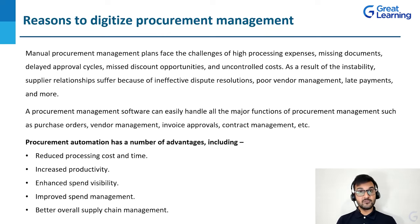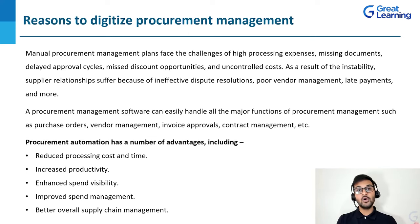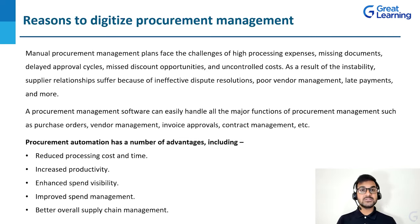Procurement automation has a number of advantages: reduced processing cost and time, no delays, increased productivity, enhanced spend visibility — understanding where and how you are spending — improved spend management, and better overall supply chain management. Overall, the entire process of acquiring goods and services becomes much easier and more efficient, and relationships with suppliers or service providers are also better when you use a procurement management software.